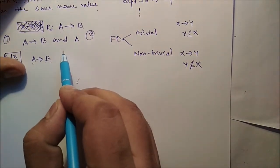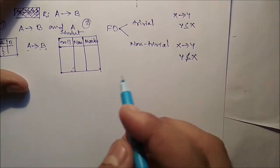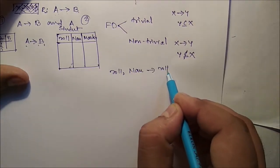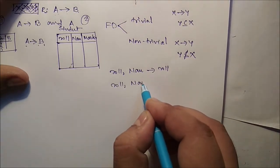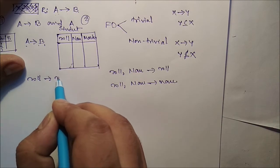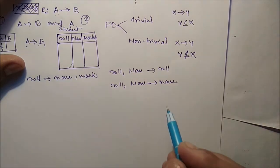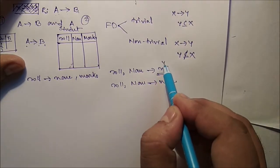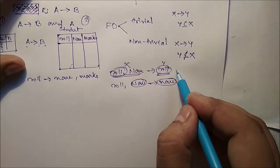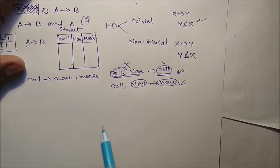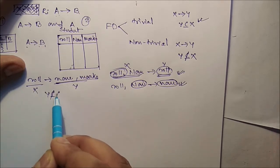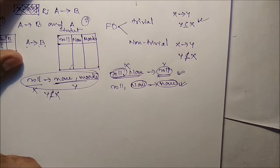For example, in a table R: from {roll number, name} we can identify roll number, and from {roll number, name} we can identify name. Here, roll number is part of {roll number, name} and name is part of {roll number, name}, so these are trivial functional dependencies. But using roll number we can identify {name, marks} — here Y is not a part of X, so this functional dependency is non-trivial.